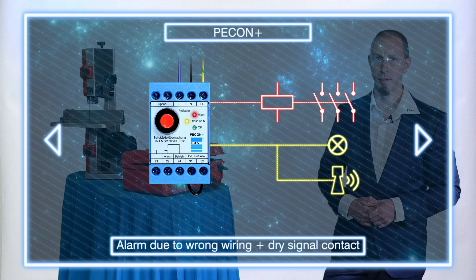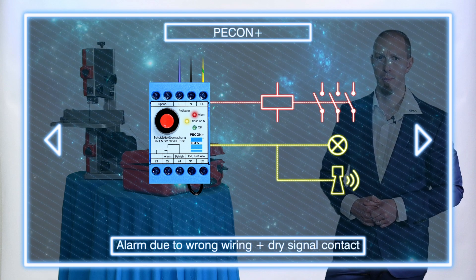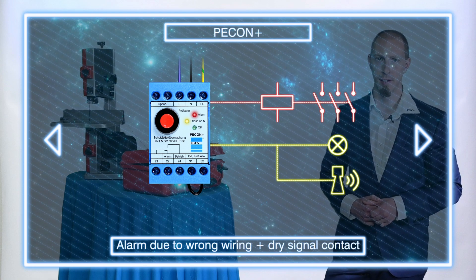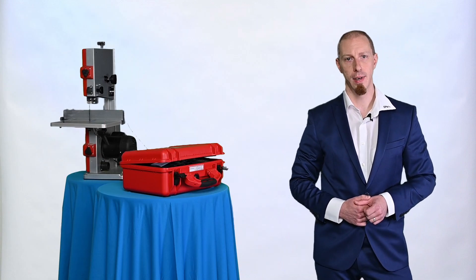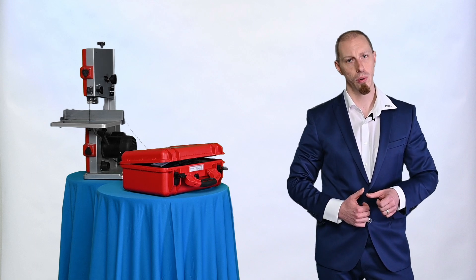Depending on the requirements, of course there are also models available which can nevertheless signal the polarity reversal via dry signal contact. This means that the pecan plus can be used universally to meet the normative requirements without incurring high costs.